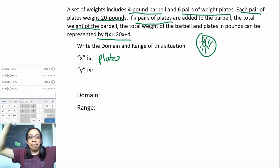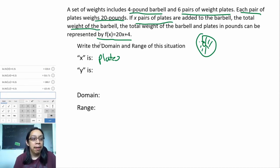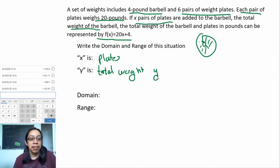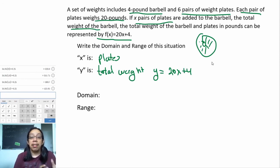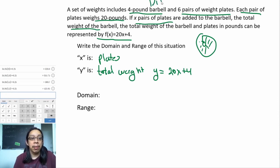They tell you that the total weight y is represented by this function, so y is the total weight, and we're using y = 20x + 4. Now ask ourselves: is it discrete or continuous? There's no mention of time, and we're talking about separate pairs of weights—so this is clearly going to be a discrete problem again, which means we have to work it out one by one.